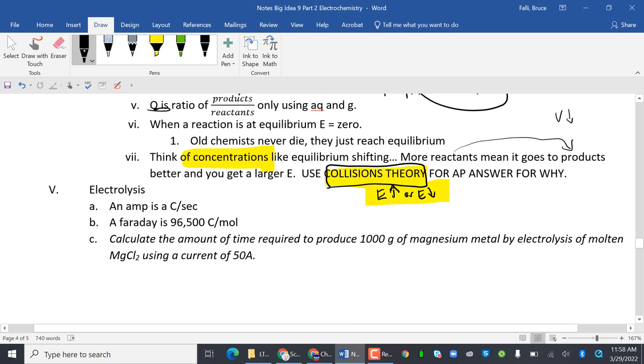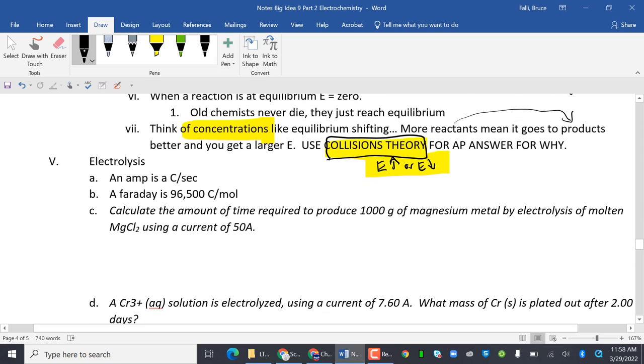Electrolysis. An amp is a coulomb per second. And an amp tells you the speed of charge flow. Faraday is 96,500 coulombs per mole.